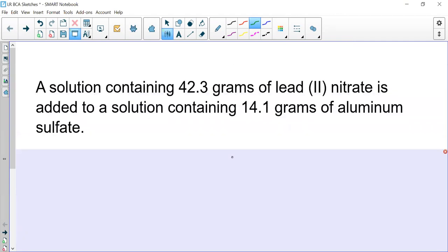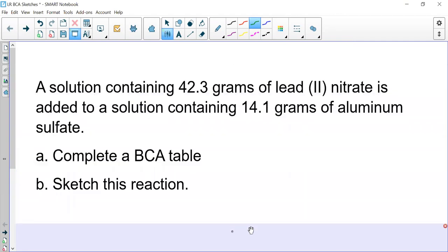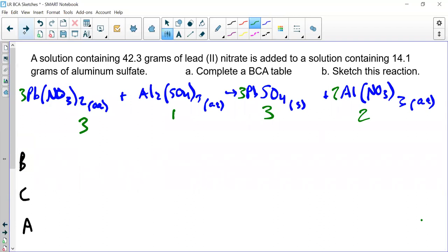So starting with an example, here we have a solution with 42.3 grams of lead(II) nitrate added to a solution containing 14.1 grams of aluminum sulfate. We're looking for a BCA table and a sketch. So what's the first thing we do? Well we need a balanced equation. I've done this already, you can see the balanced equation here.